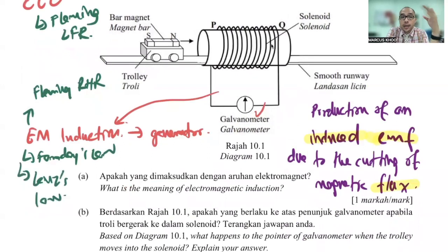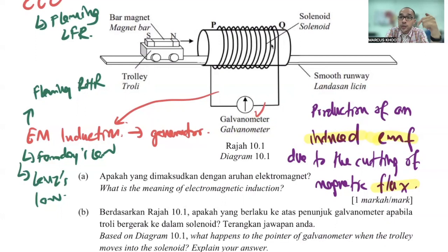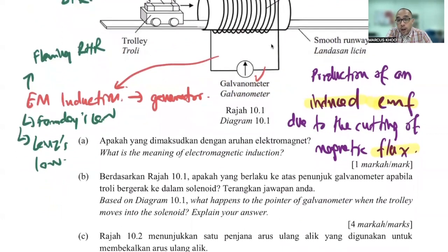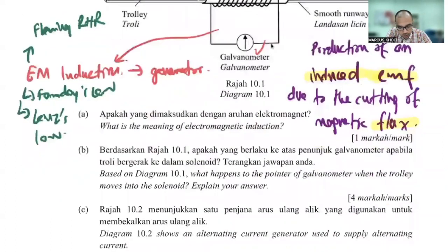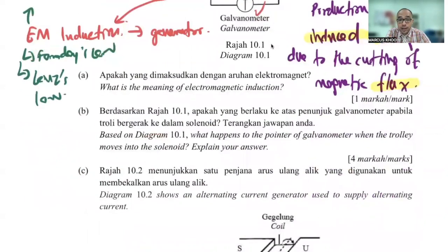In this case we are in the electromagnetic induction zone, so most likely the entire question will be about electromagnetic induction. The meaning of electromagnetic induction is the production of induced EMF due to the cutting of magnetic flux — you can use 'induced current,' but 'induced EMF' is the correct terminology. The question asks: what happens to the pointer of the galvanometer when the trolley moves into the solenoid? You need to apply Lenz's law and explain your answer.